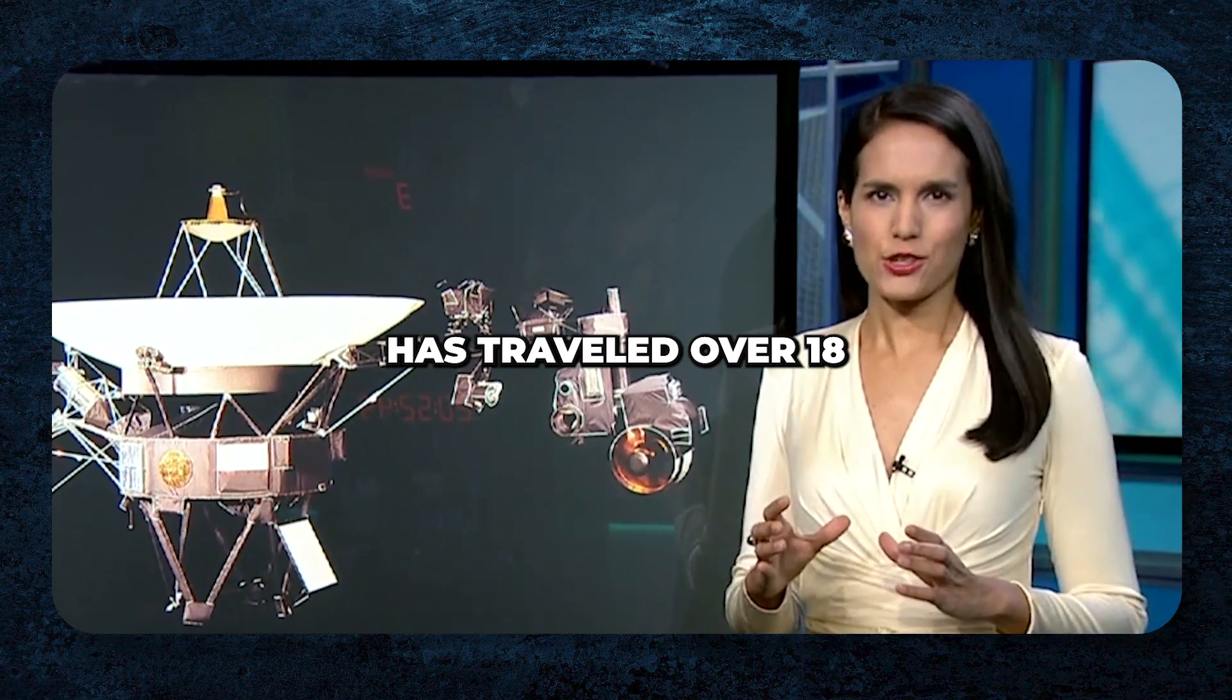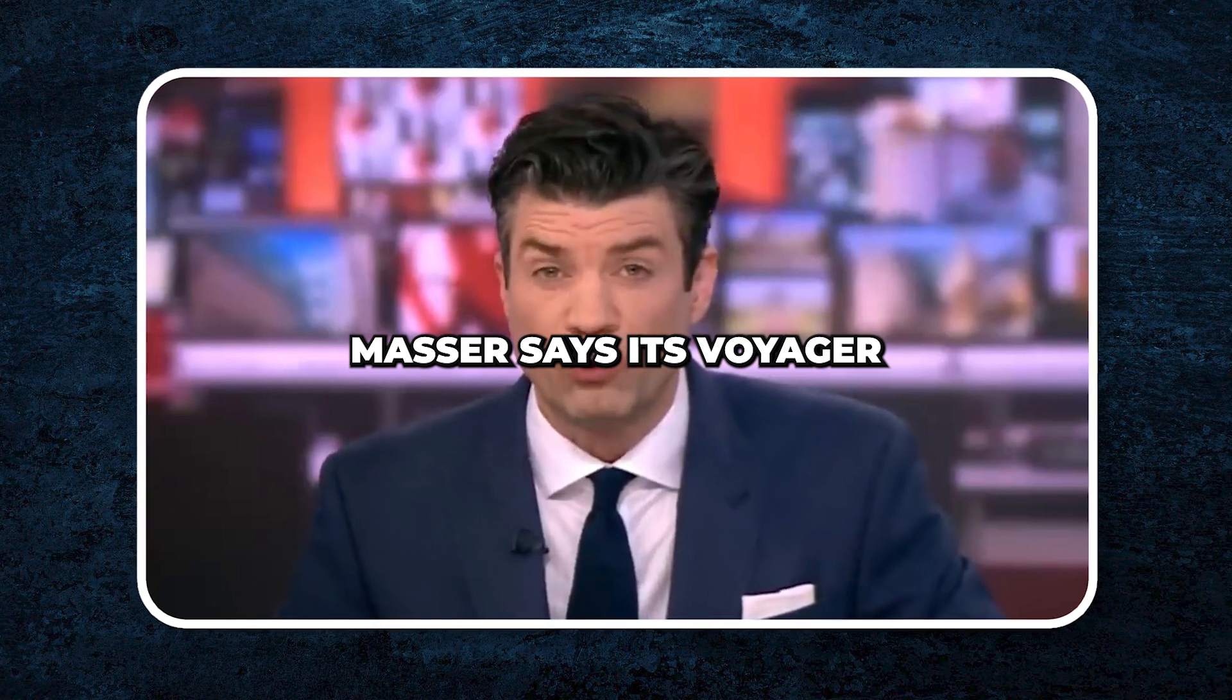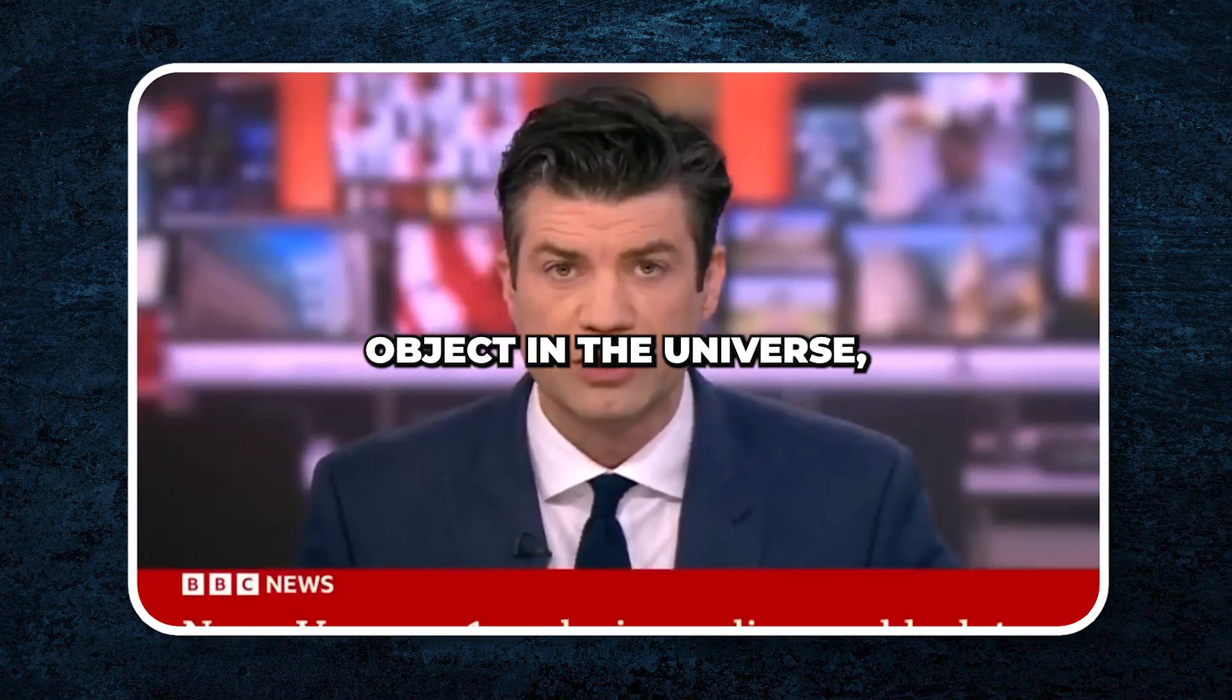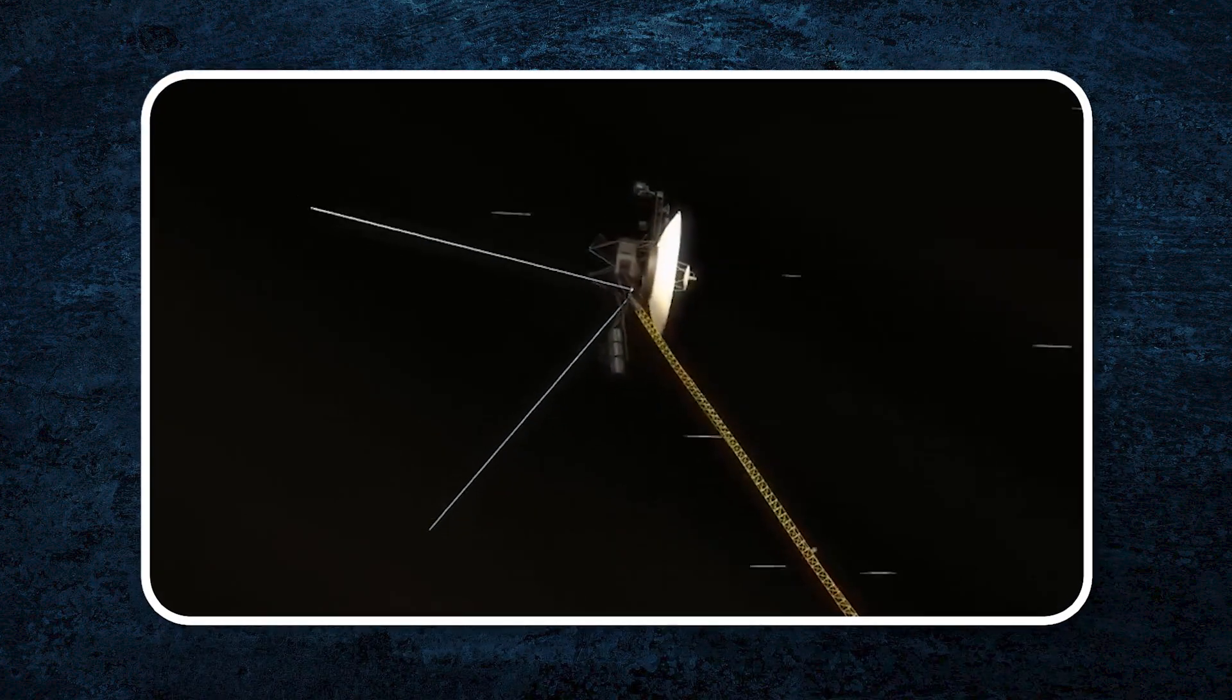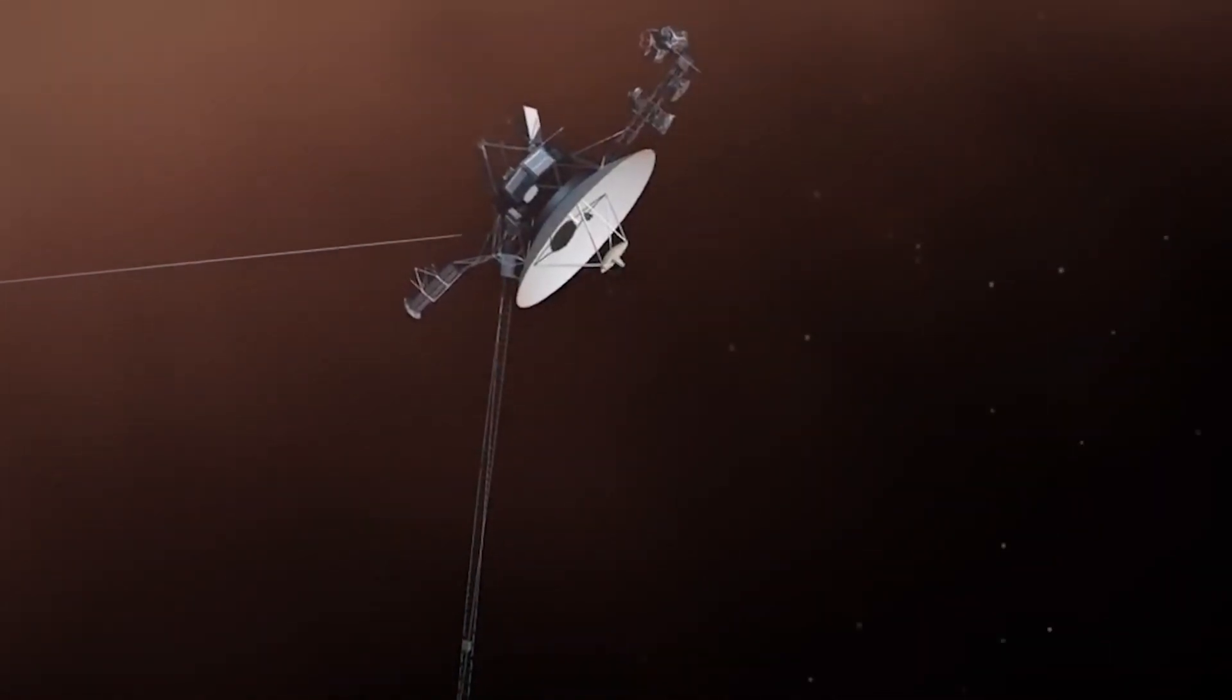NASA says Voyager 1 has traveled over 18 billion kilometers. NASA says its Voyager 1 probe, the most distant human-made object in the universe, is sending usable information. Three minutes ago, Voyager 1 did the unthinkable. It turned back and sent a terrifying signal to Earth.